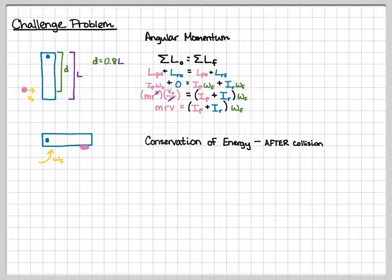So right after the collision, both the rod and the particle have rotational kinetic energy. So starting with the particle, it's one half i omega squared, plus the kinetic energy of the rod, which is also one half i omega squared. This part is slightly tricky.